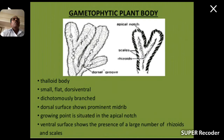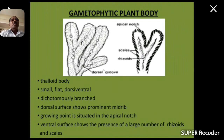Gametophytic plant body of Riccia. The plant body of Riccia is thaloid, small, flat, and dorso-ventrally flattened, dichotomously branched. The dorsal surface shows a prominent midrib. The growing point is situated in the apical notch, while the ventral surface shows the presence of a large number of rhizoids and scales.